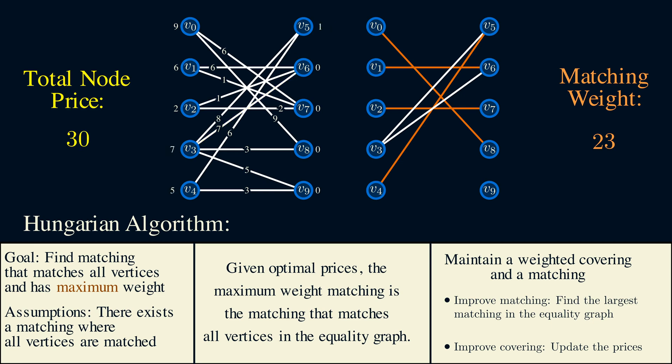Now, there's still no path from 3 to 9, so we find all of the nodes reachable from 3, then update their prices. This time, we can subtract 2 from the left and add 2 to the right. Then, the total vertex price drops to 28. And the edge 4, 9 enters the equality graph. Now, finally, we have an augmenting path from 3 to 9. So we can swap assignments along this path to get a larger matching. Now, the new matching weight is 28, which is the same as the total node price, so we know that this matching is optimal by Egerváry's theorem.